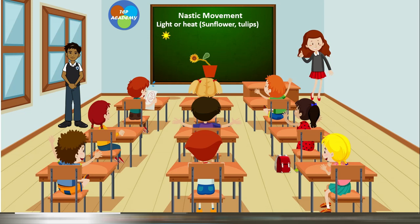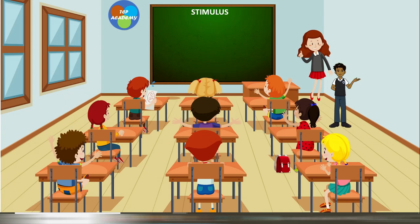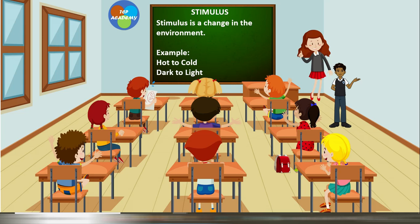Nastic movement is also evident with the sunflower as it responds to light or heat. We see the sunflower's head moving through the course of the day as it follows the sun. A stimulus is a change in the environment — from cold to hot, dark to light, or water within the environs of the plant.